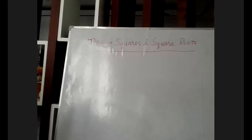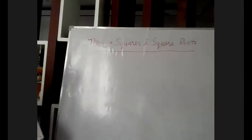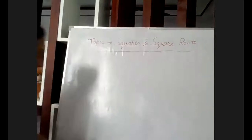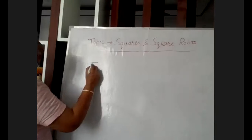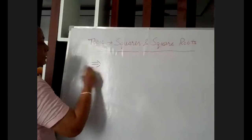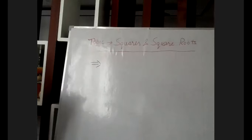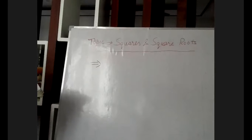Now I'm starting from exercise 3.2. The first property is: a number having 2, 3, 7, or 8 at its unit place is never a perfect square.